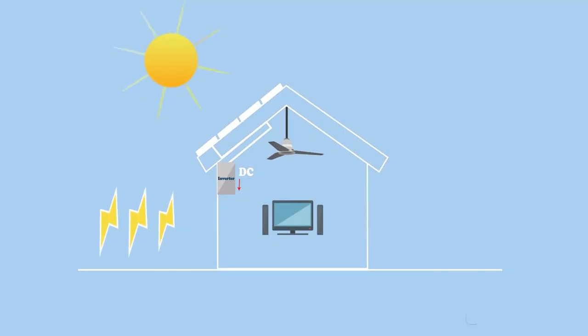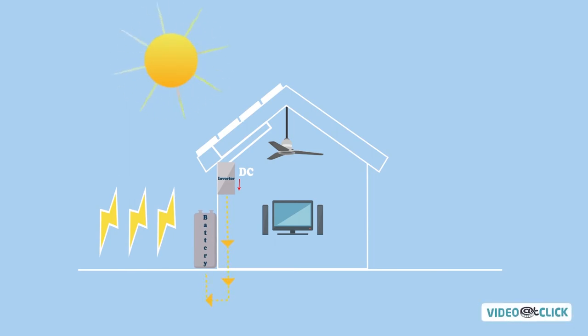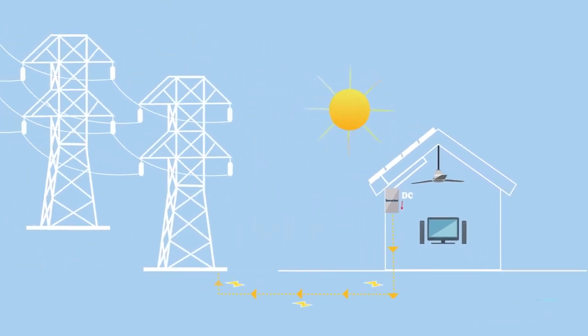When your solar panels create more electricity than needed, you can store that electricity in a backup battery or send the extra power back to the grid. Most utility companies will provide credits for this extra energy to use on future bills.